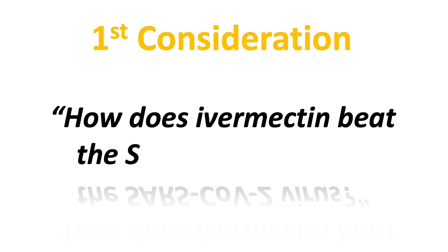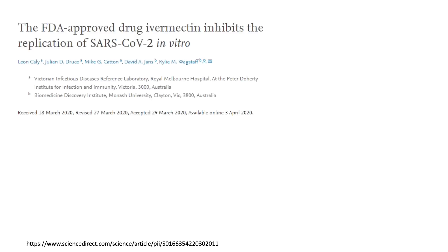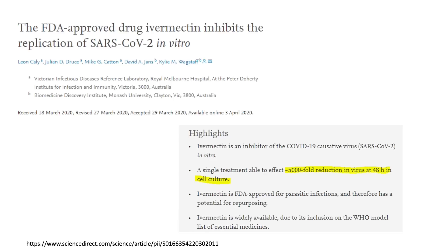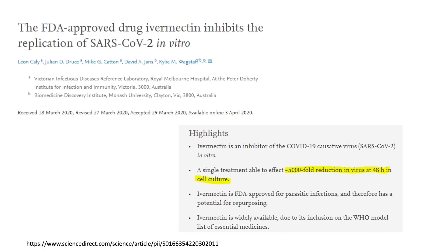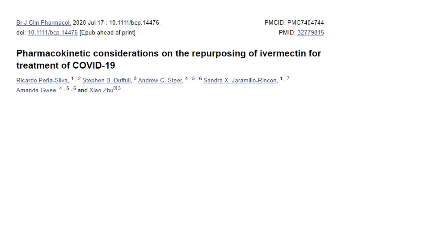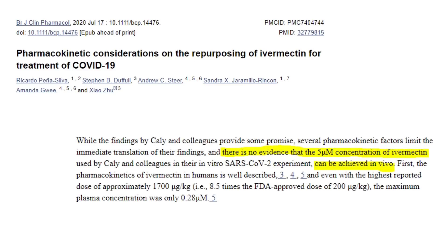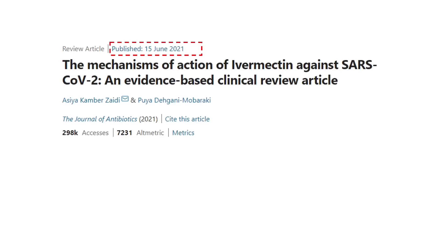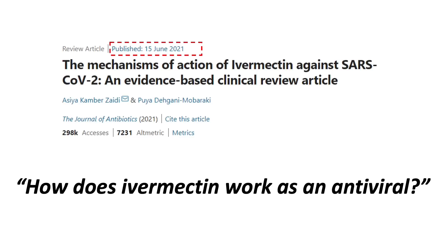The first consideration is: what is the proposed mechanism of ivermectin as an antiviral? In other words, how does ivermectin beat the SARS-CoV-2 virus? In an early in vitro study done by an Australian group, it showed that ivermectin effectively reduced the viral load by 5,000-fold after 48 hours of treatment in cell culture. But critics of this paper focused on the very high concentration of ivermectin — 5 micromolar — that was used in the experiment. But very recently, a new review article was published to summarize the possible mechanisms of how ivermectin fights the virus.